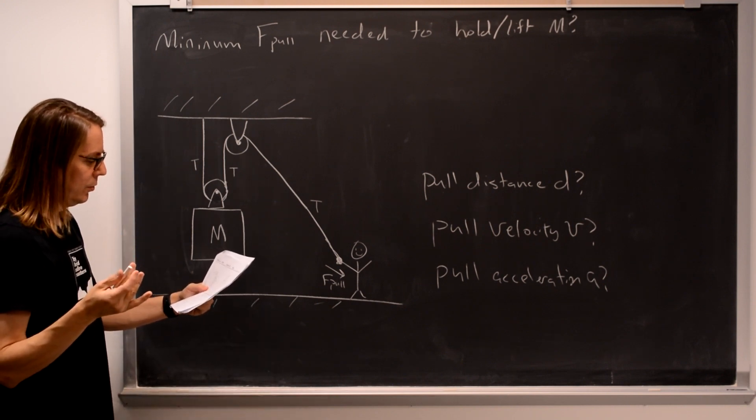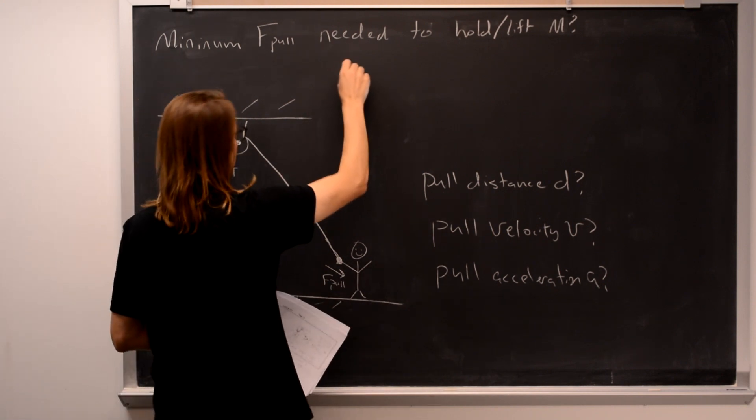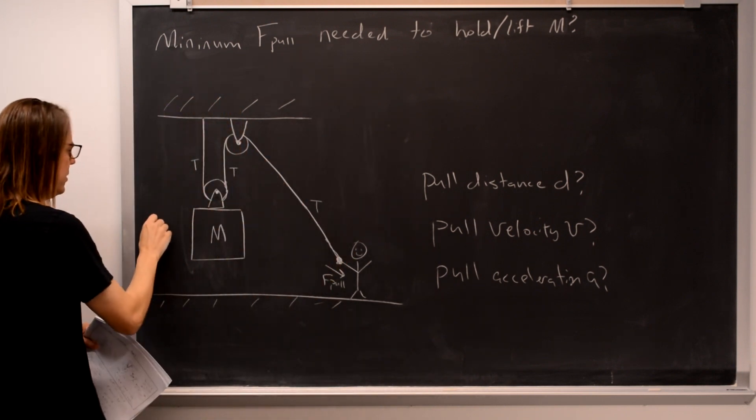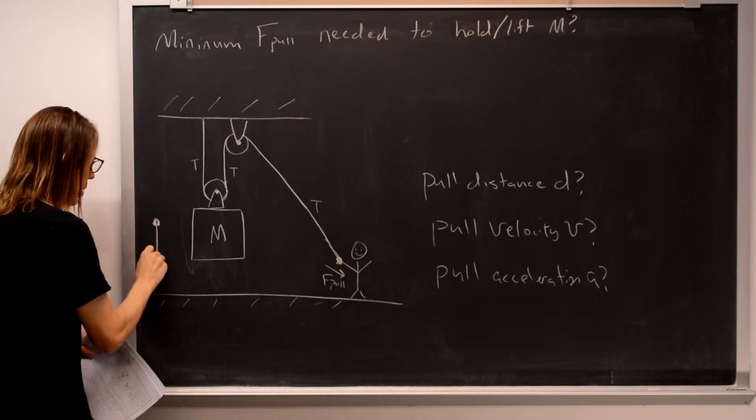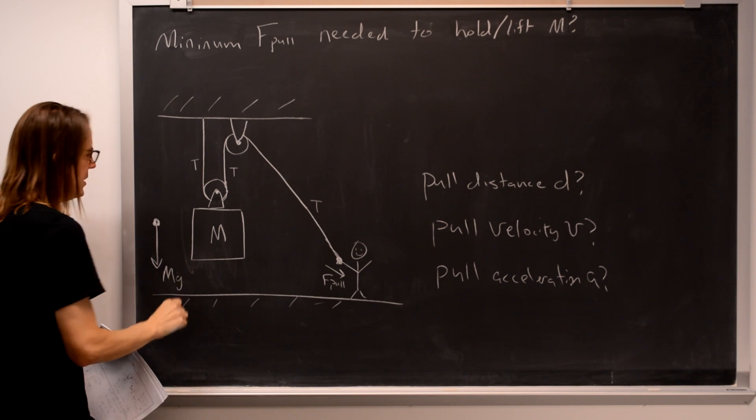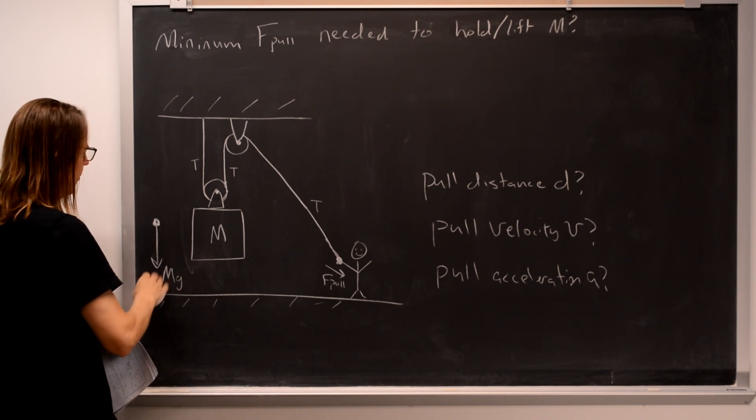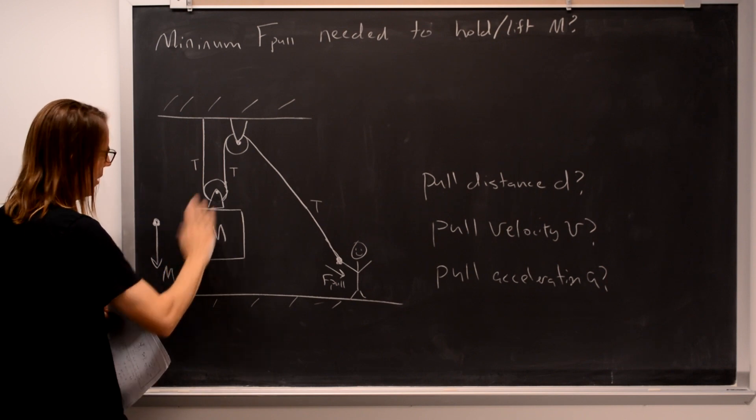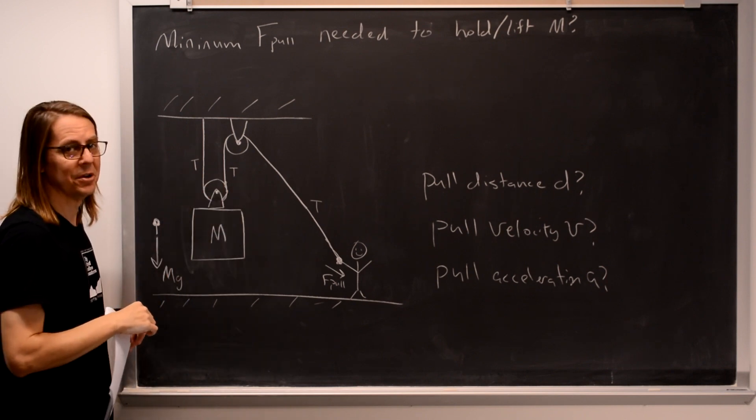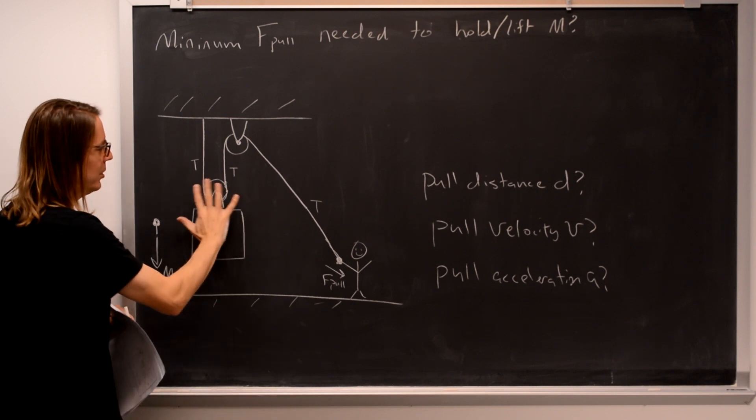Okay, so let's do a free body diagram with the pulley. Here we go. Let's draw it here. Big MG down. And, the pulley, let's say this is the pulley and not the mass. Or it's the pulley and the mass together. This is one solid object.